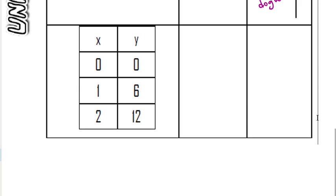For our last example here we have a table. So for our table to find slope, this one is a proportion. Here we could still do Y divided by X.